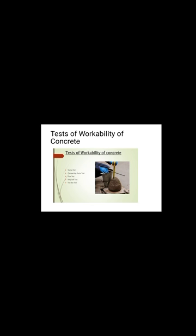Workability is the ease with which one can mix, transport, place, and compact concrete. Now we will talk about the slump test. The slump test consists of a conical frustum. Wet concrete is placed in the conical frustum, and once the frustum is removed, the concrete starts slipping down. Based on the difference in heights of the initial concrete and the final concrete, the slump test tells you about workability.